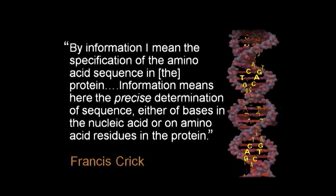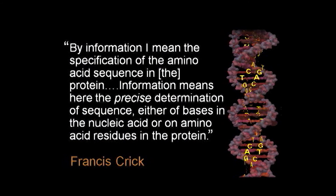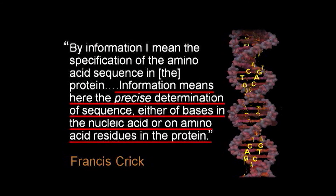Francis Crick made that point very early on. He was aware of the mathematical theory of information, and said that when talking about information in DNA, we're not talking about merely Shannon information as engineers call it — we're talking about specified or functional information. He said: 'Information means the precise determination of the sequence, either of the bases in the DNA or the amino acids in the proteins.' Those subunits have to be specifically arranged to perform their jobs inside cells.